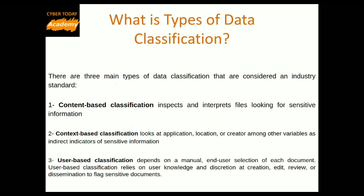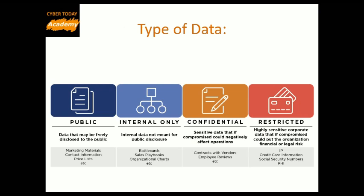The last classification type is user-based classification. User-based classification depends on a manual end-user selection of each document. It relies on user knowledge and discretion at creation, edit, review, or dissemination to flag sensitive documents. Each organization should pick the best type of data classification that suits its business.